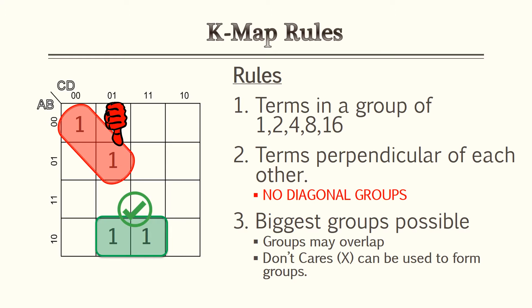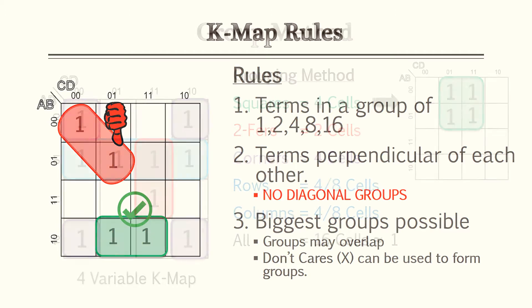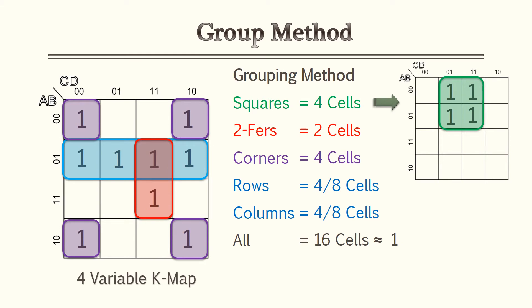Terms must be in groups of 1, 2, 4, 8, and 16. Groups of 2, shown in red, can go horizontal or vertical and circle just 2 minterms. You can have groups of 4 whether it's corners, squares, or rows and columns — shown in light blue is one in a row, and the purple shows four corners. Rows and columns can also form groups of 8, such as two rows or two columns. And if all 16 cells have a 1, that gives a group output of 1.